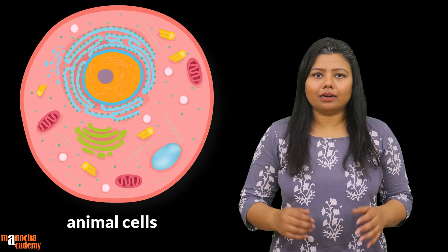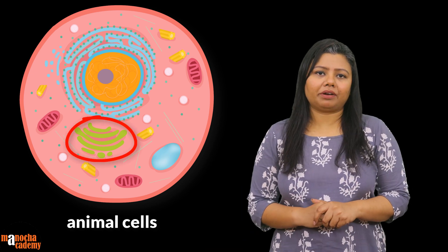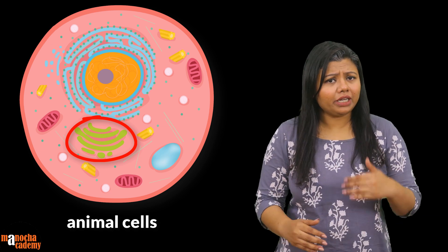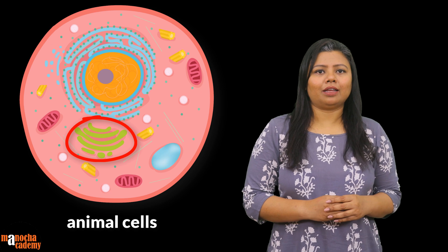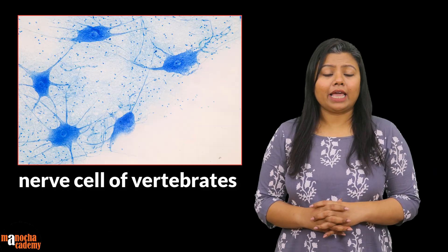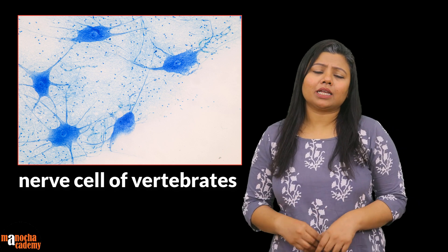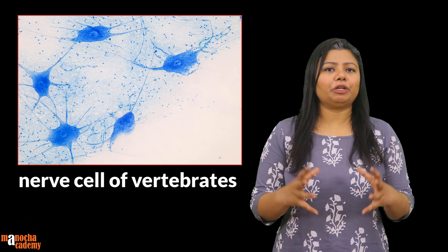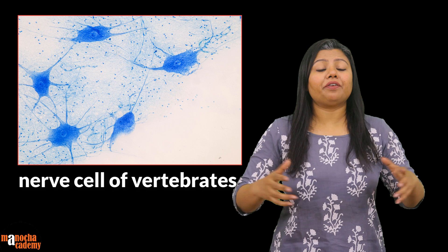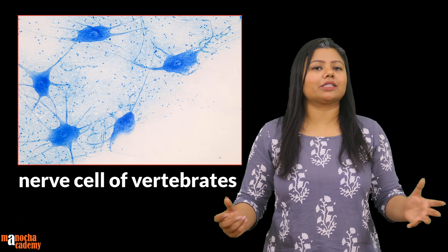In animal cells, especially in vertebrates, most cells have the Golgi apparatus in a localized region, usually very near the nucleus and close to the endoplasmic reticulum. In invertebrates and in the nerve cells of vertebrates, the Golgi bodies do not produce a Golgi apparatus in a localized region — they remain freely floating, individually, in the cytoplasm.